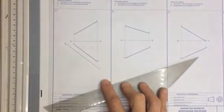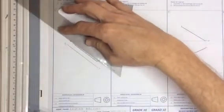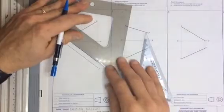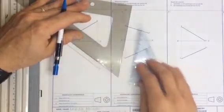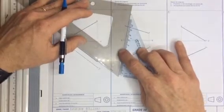Once I've got that I'm then going to take my set square again. I'm going to place the set square up against the line. I'm going to place my other set square next to it. I'm going to slide it back.